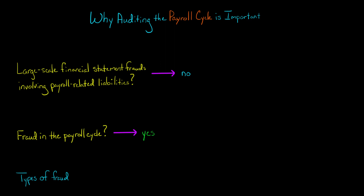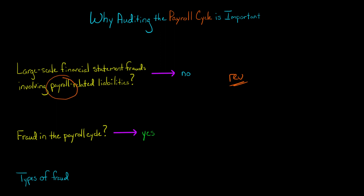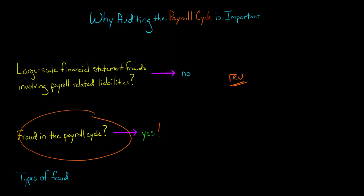In this video, I'm going to talk about why auditing the payroll cycle is important. When you think about large-scale financial statement frauds, you probably think about things like improper revenue recognition, and you probably don't think about payroll liabilities. But that doesn't mean there's no fraud in the payroll cycle. In fact, you can have a lot of fraud in the payroll cycle, and this is definitely something that the auditor should focus on.